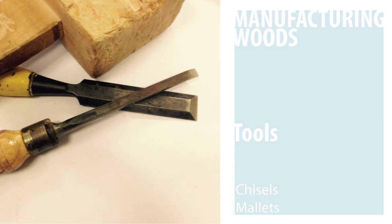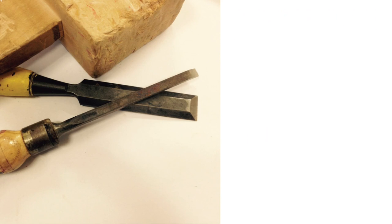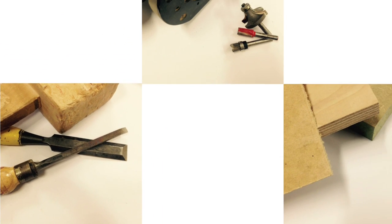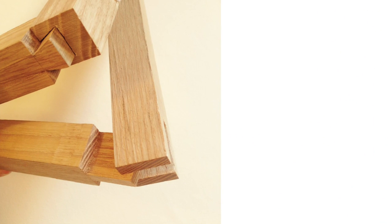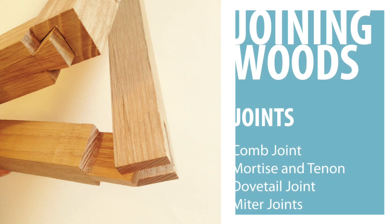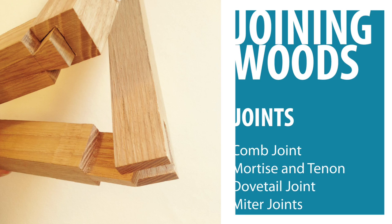Once we have the materials and the tools to manufacture in wood, we then decide on a method to join the materials together. Woodworkers can cut the wood cleverly to create a variety of box joints such as a comb joint or a dovetail joint, and also frame joints such as mortise and tenon or dowel joints.